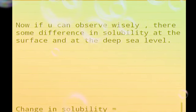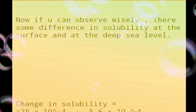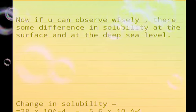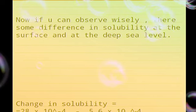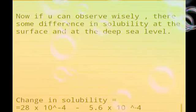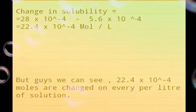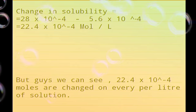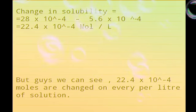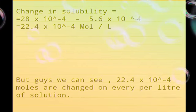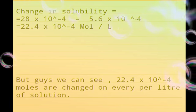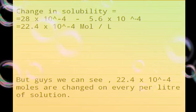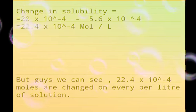There will be a difference, so that difference we have to find. There will be change in the solubility. We will take 28 times 10 to the minus 4 and minus this 5.6 times 10 to the minus 4. The difference is 22.4 times 10 to the minus 4 moles per liter.